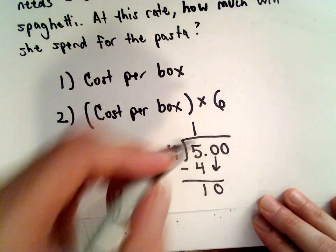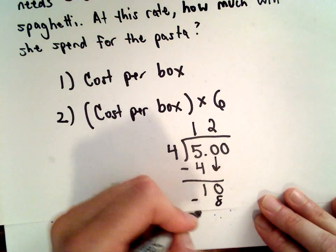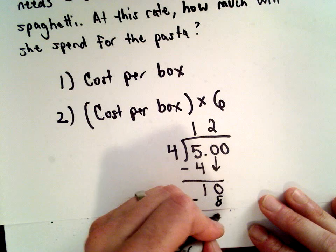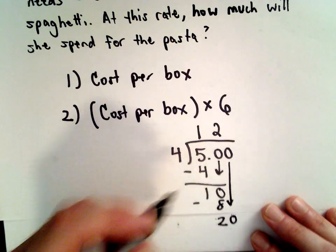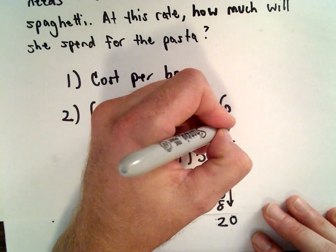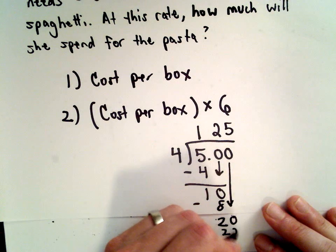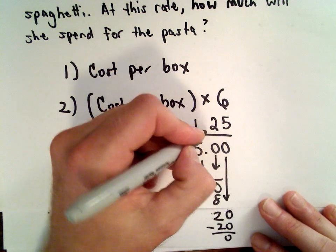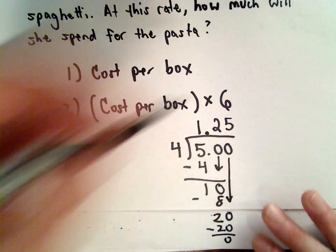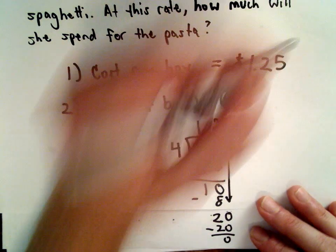Four will go into ten two times. Two times four is eight. We'll subtract. Ten minus eight is two. Again we'll drop down the next zero. And four will go into twenty five times. And five times four is twenty so there's no remainder. So we'll just carry the decimal place right up. So the cost per box is one dollar and twenty five cents.